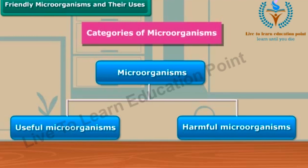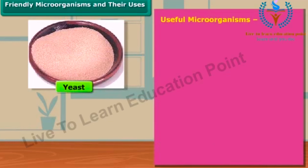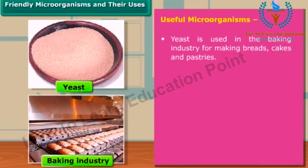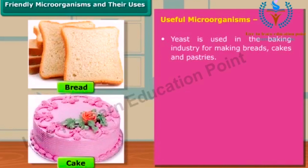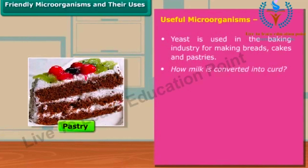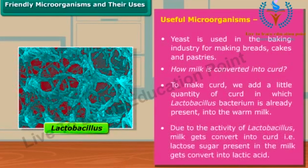Now we discuss the friendly activity of microorganisms in detail. One such friendly microorganism is yeast. Yeast is used in the baking industry and in our homes for making breads, cakes, and pastries. The bacterium Lactobacillus is useful to make curd from milk.